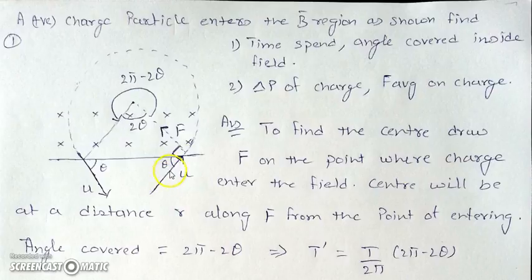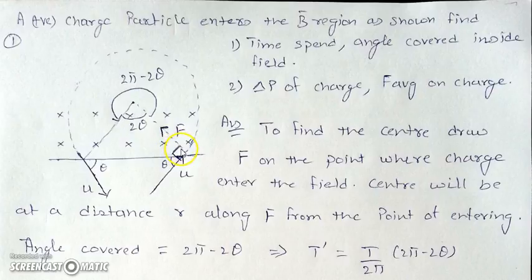The method is: given the velocity direction of the entering particle, you have to find the center of the circular motion. To find the center, draw a perpendicular on the velocity vector, which is the direction of force. Using the cross product V×B, find the direction of force, which will be perpendicular to the velocity. The center is at a distance R — where R = mv/qB — from the point of entry, in the direction of force.